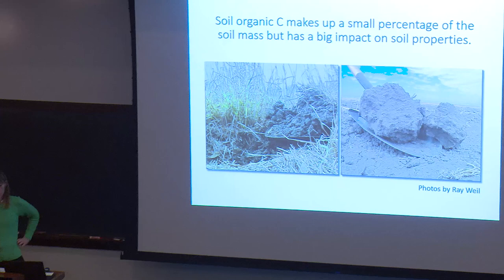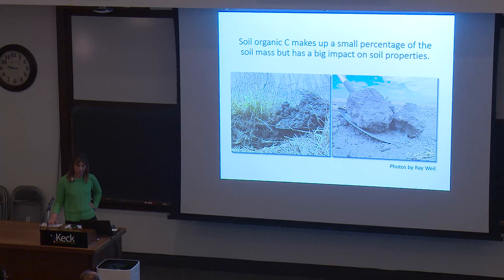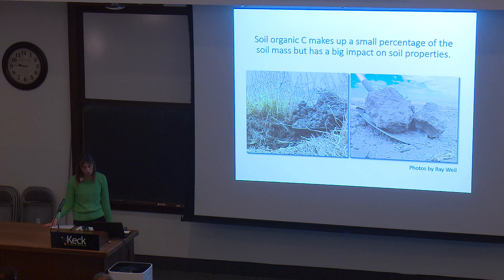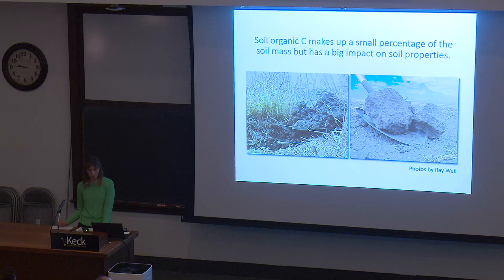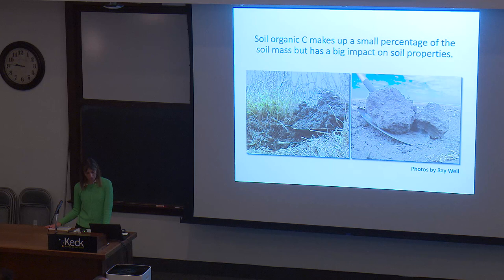Soil organic carbon makes up a pretty small percentage of the soil by mass, usually less than five percent, but has a big impact on soil properties. As you can see in these photos, higher soil organic carbon means darker color, less compaction, higher nutrient content, water retention, more biological activity, better ability to retain nutrients, and even higher crop yields. I'll be talking interchangeably about soil carbon and organic matter, keeping in mind that organic matter is composed of about 58 percent soil carbon.